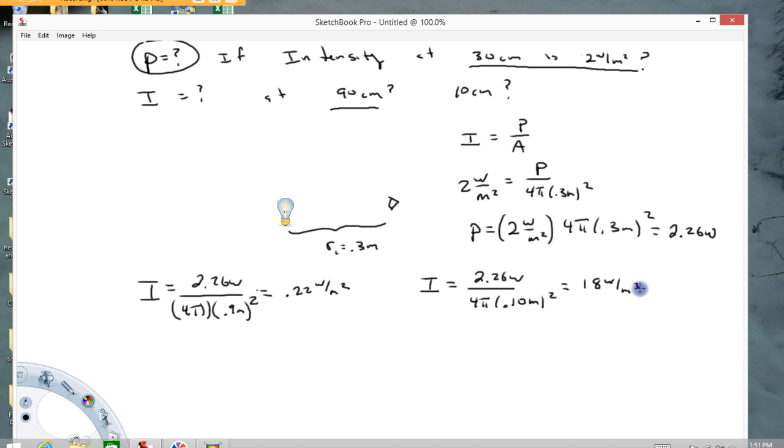And you notice that's a lot bigger. Well, when we go from 30 centimeters to 10 centimeters, we have cut the distance by a third. And because of that r² in the bottom, we would expect 9 times the intensity. So you notice the 2 turned into an 18. All right, so this is one way to calculate these new intensities.